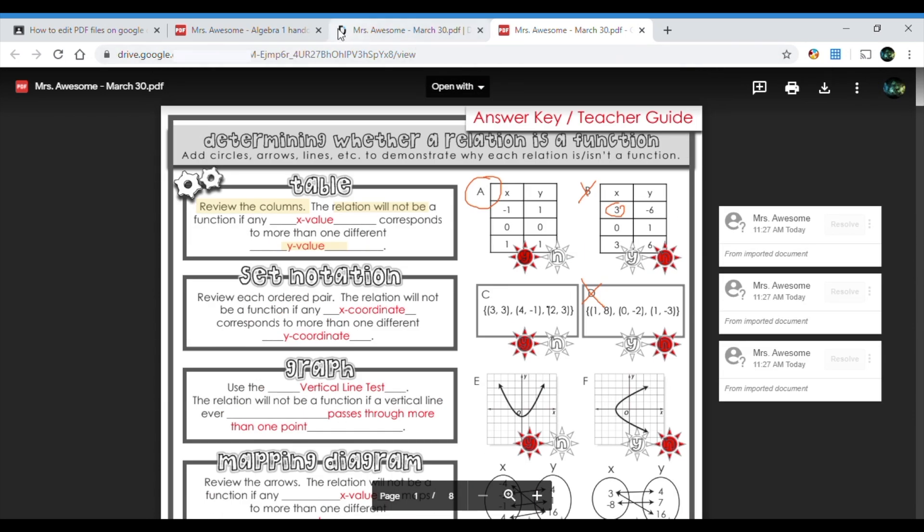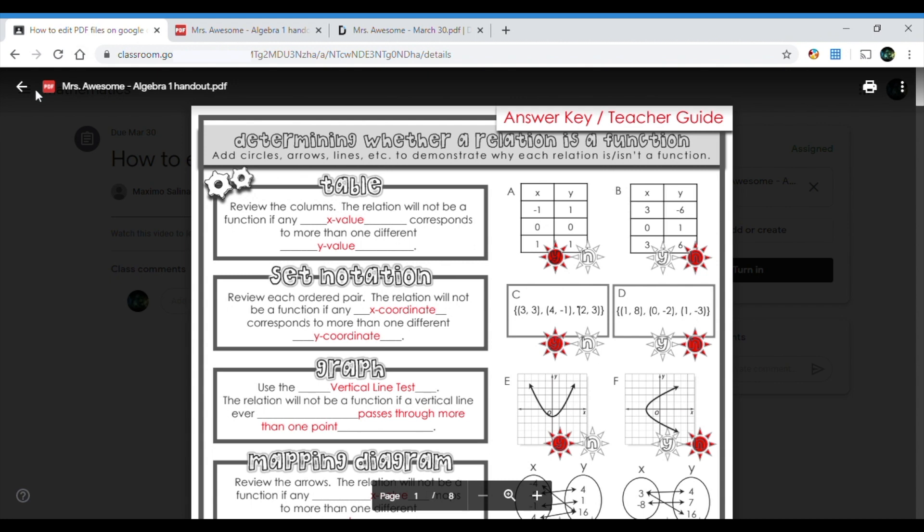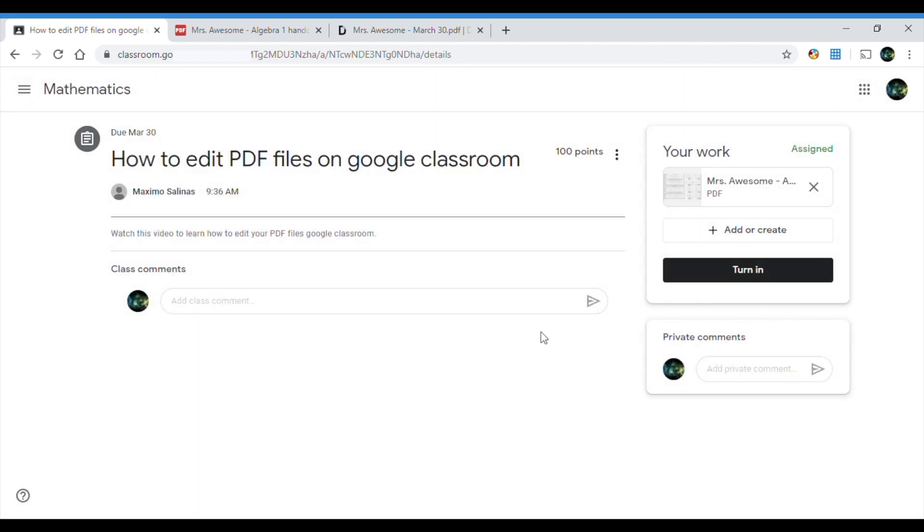So now I'm gonna go back to... I can close this. I don't need it. I'm gonna go back to my Google Class. All I have to do right here is click the close button, which is this arrow, and it takes me back to my assignment page.